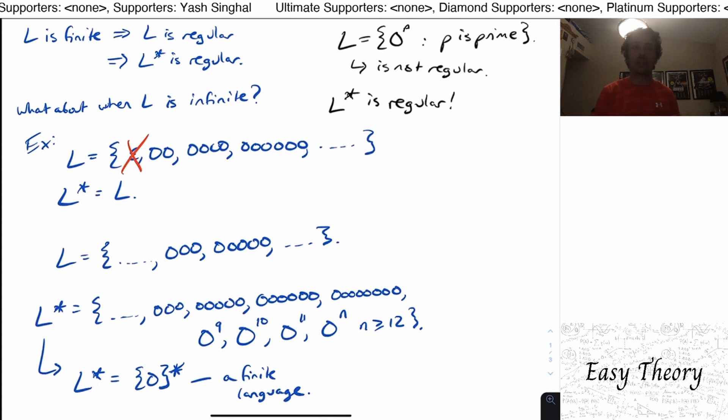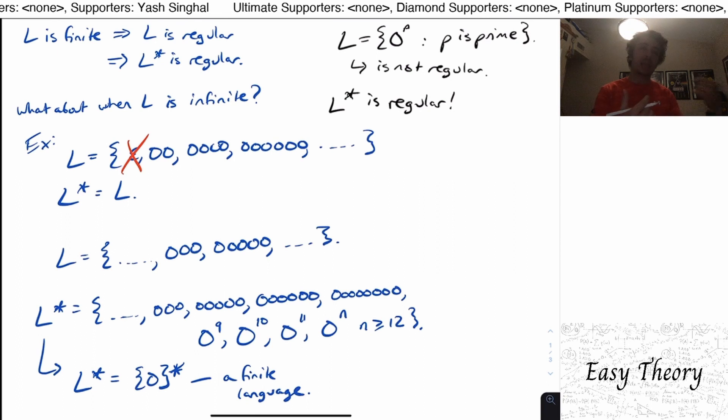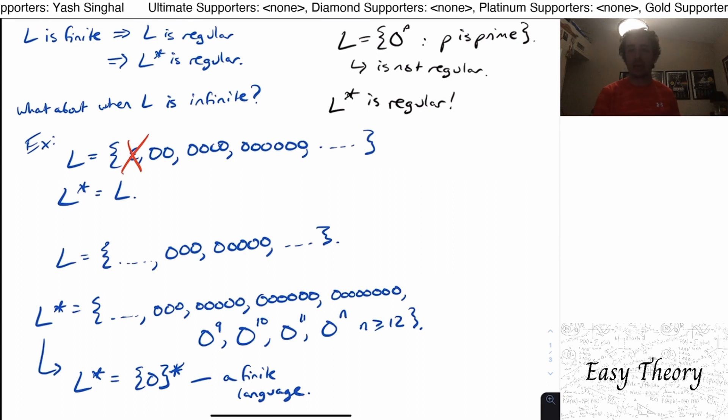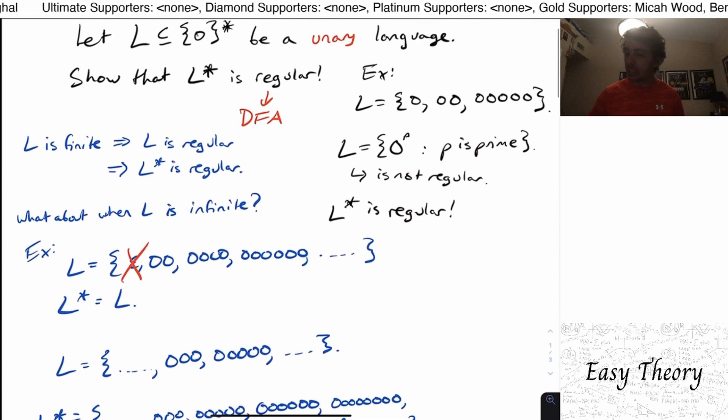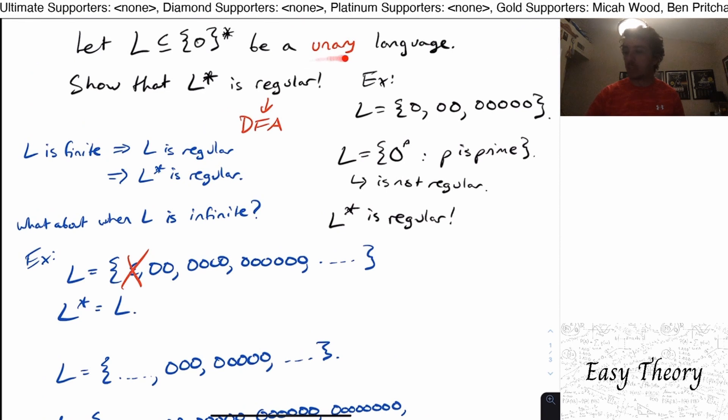Because all that we can really talk about now is just the length of the strings. If there were different characters, then a string being the same length as another one, it may not be the same string. So it's actually pretty amazing what we can say just because the language happens to be unary here.